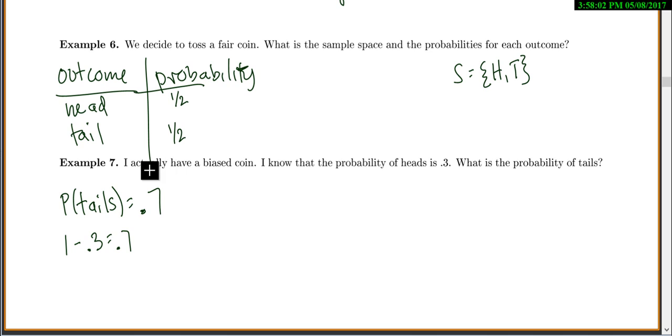For example 7, I actually have a biased coin. I know that the probability of heads is 0.3. What is the probability of tails? To find that, we say the probability of heads equals 0.3. How do you find the probability of tails? Well, you remember that everything has to add up to one. So 0.3 plus something equals one. Or one minus 0.3 gives me 0.7, so we get probability of tails as 0.7.